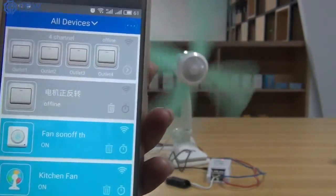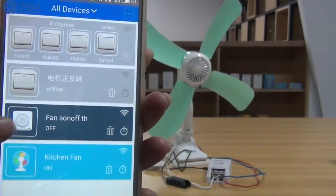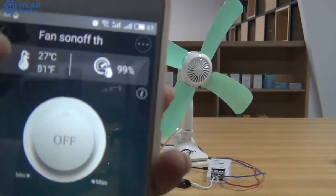Hit the device icon, you can turn on the fan. Hit it again, the fan will be turned off. Hit the toolbar, you can see the current temperature and humidity.